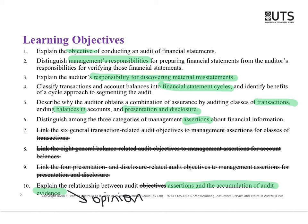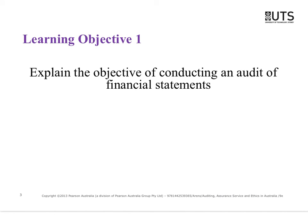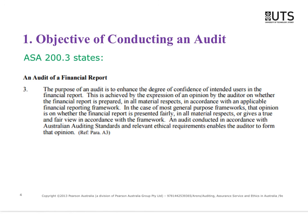ASA 700 says we have to generate opinions, including 705 and 706, and the Corporations Act also requires you to provide this report. So why do we have an audit? Going back to the auditing standards, ASA 200 covers this.